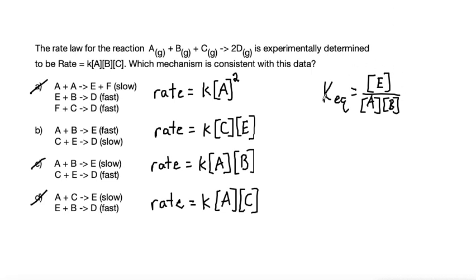So then if we want to solve this K_eq equation for concentration of E, we can multiply both sides by concentration of A and concentration of B, making it that K_eq times concentration of A times concentration of B is equal to concentration of E.